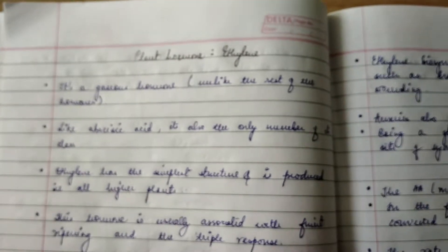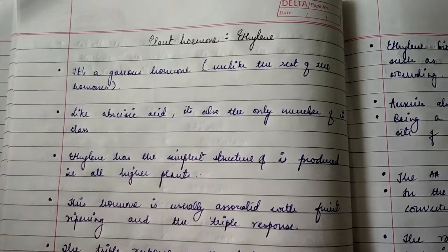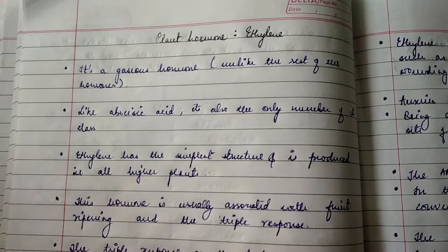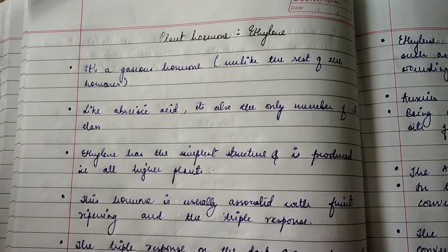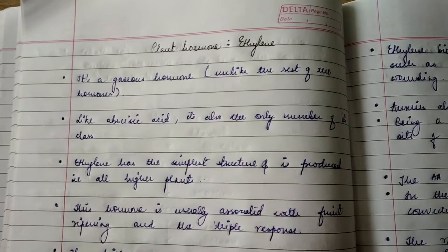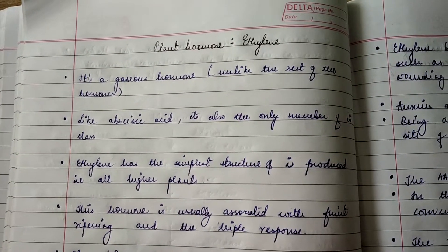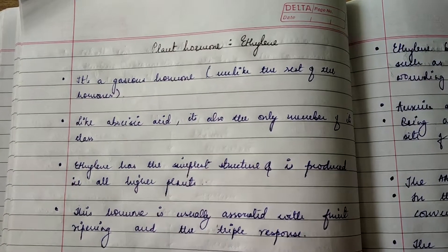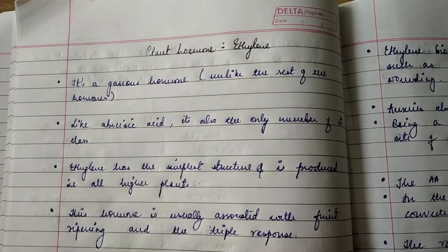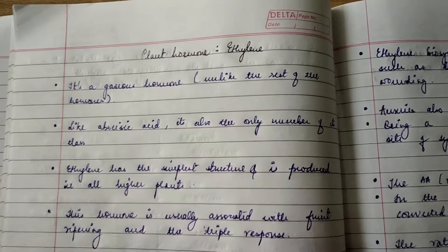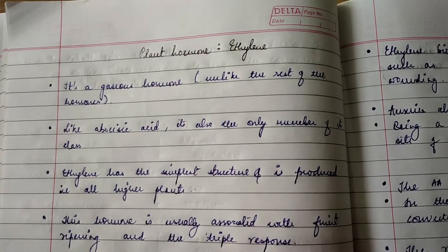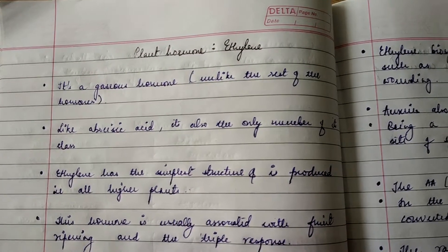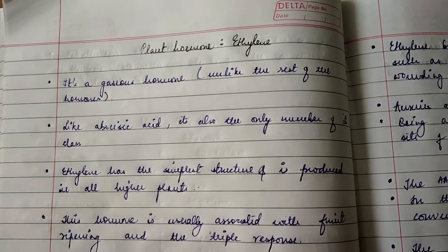Hi guys, welcome back to another video. Today we'll be studying the last plant hormone in the syllabus, and that is ethylene. Ethylene is used by industries like Mother Dairy Fruits and Vegetables and many others dealing with fruits and vegetables. They use ethylene as a ripening agent for the ripening process taking place in papayas, bananas, and many other fruits.